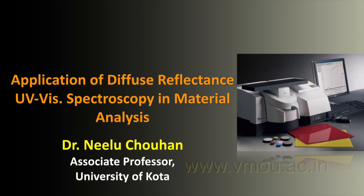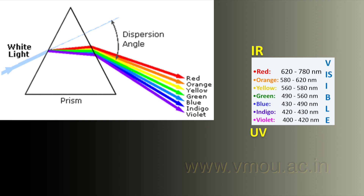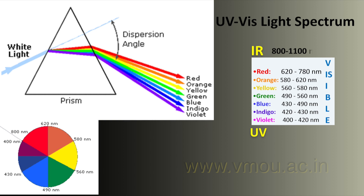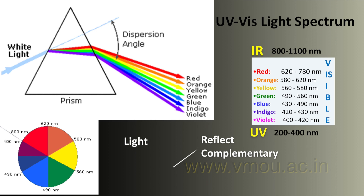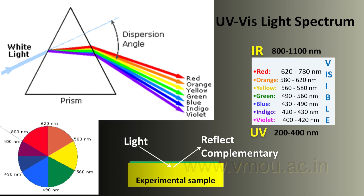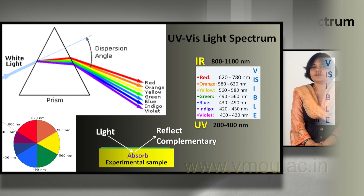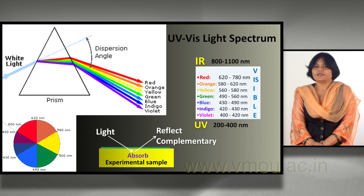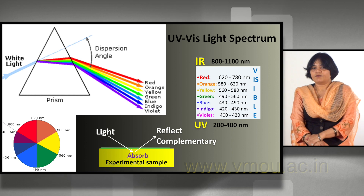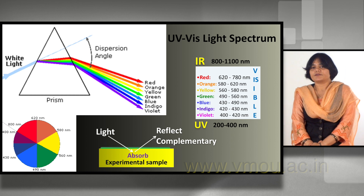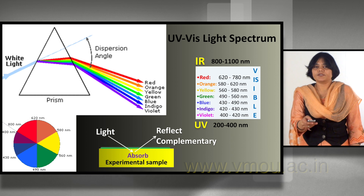This is the light spectrum, which is produced when we disperse white light through a prism. It disperses into several ranges. Basically we divide it into three parts: IR from 800 to 1100 nanometers, visible light from 780 to 400 nanometers containing seven colors, and UV from 200 to 400 nanometers.